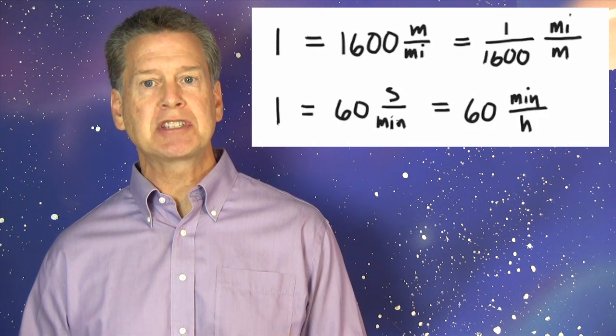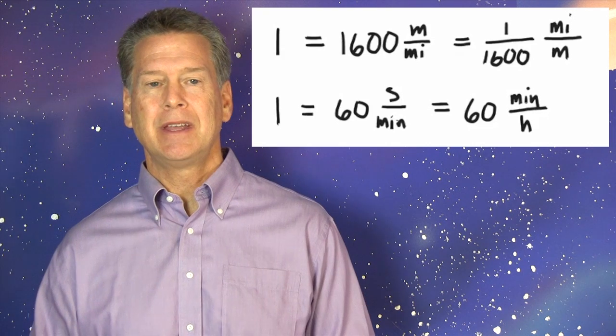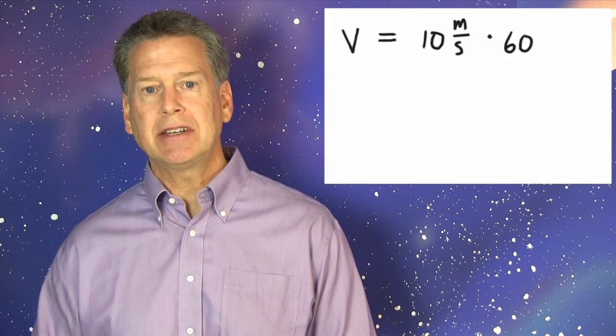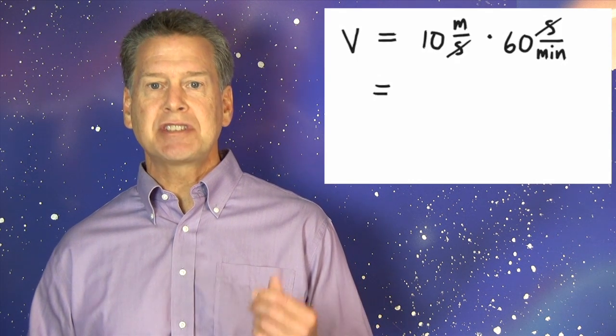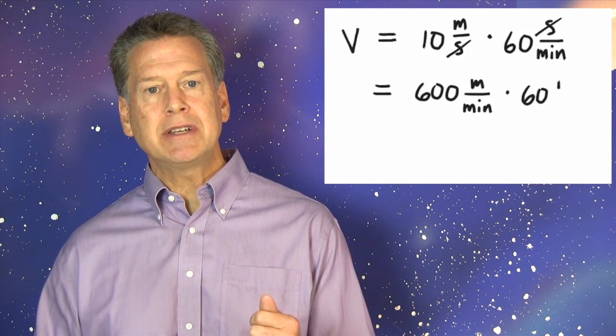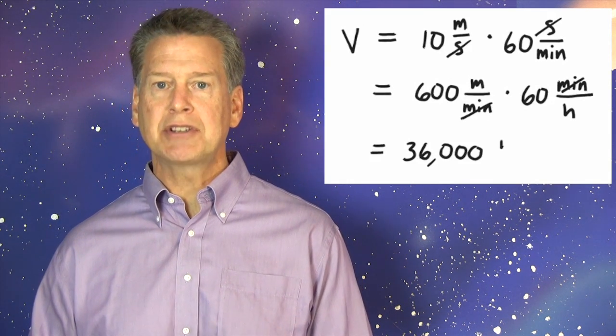Let's deal with the time units before dealing with the distance units. We'll see why soon. The speed of the sprinter equals 10 meters per second times 60 seconds per minute equals 600 meters per minute. And 600 meters per minute times 60 minutes per hour equals 36,000 meters per hour.